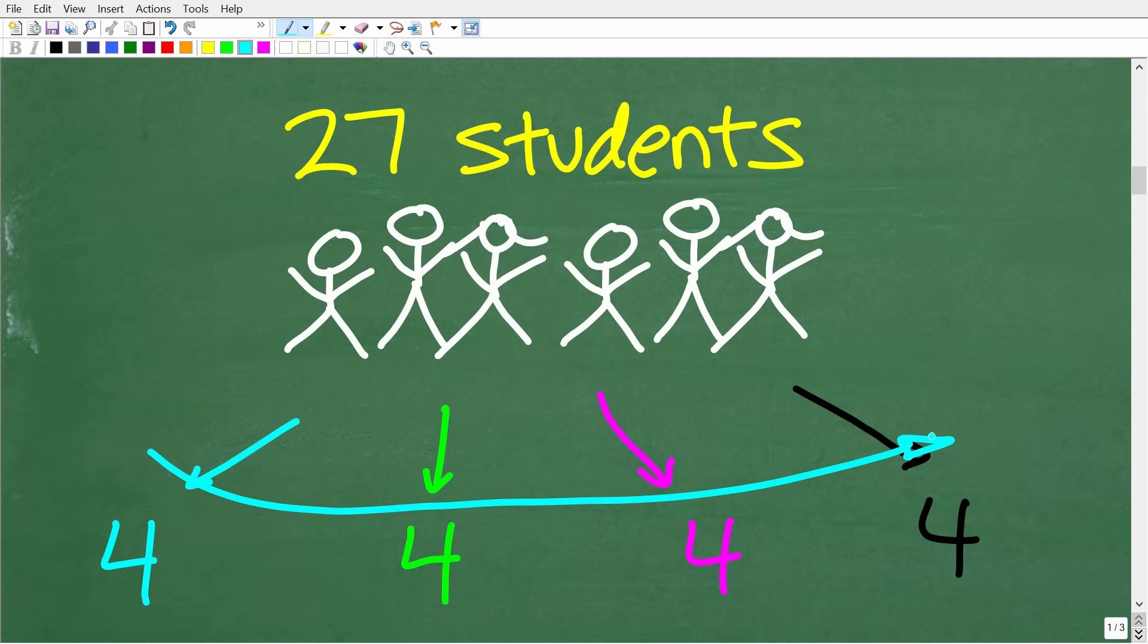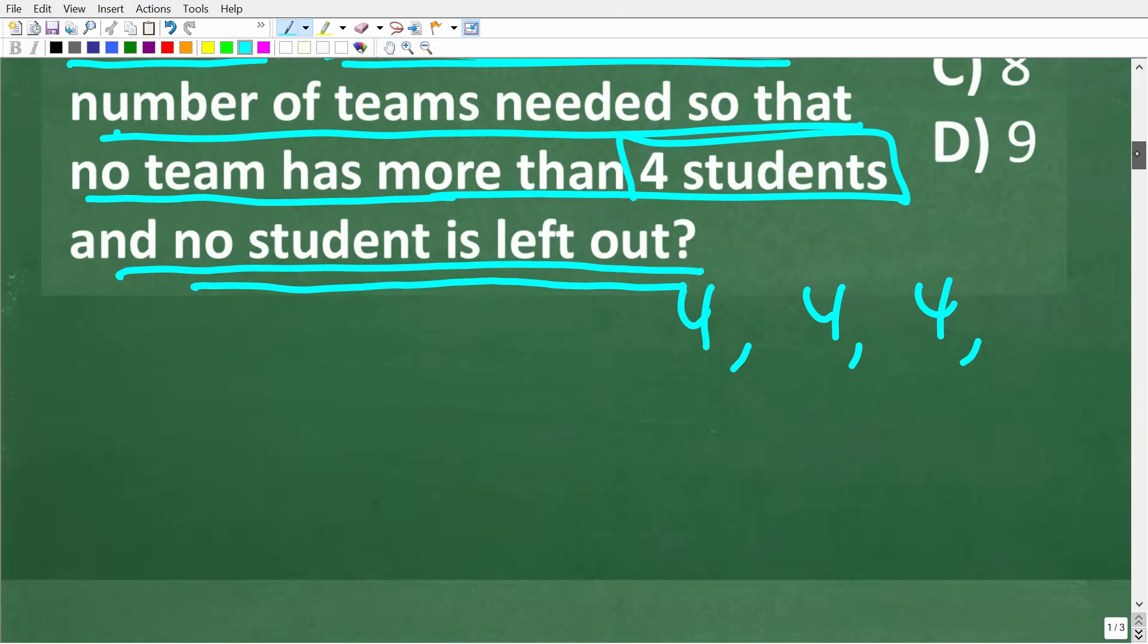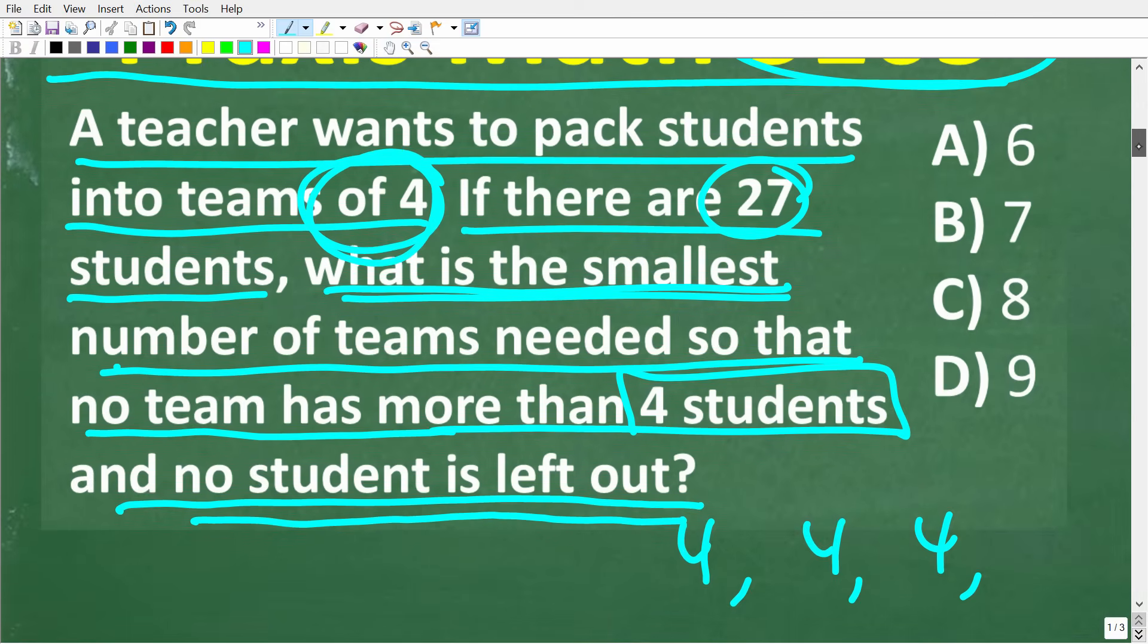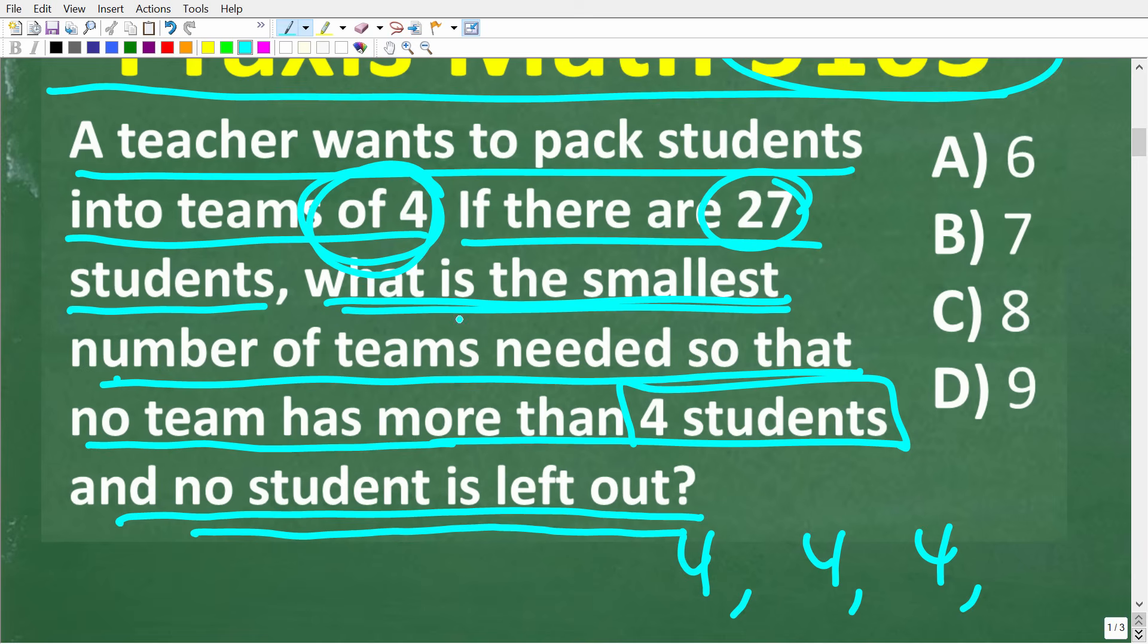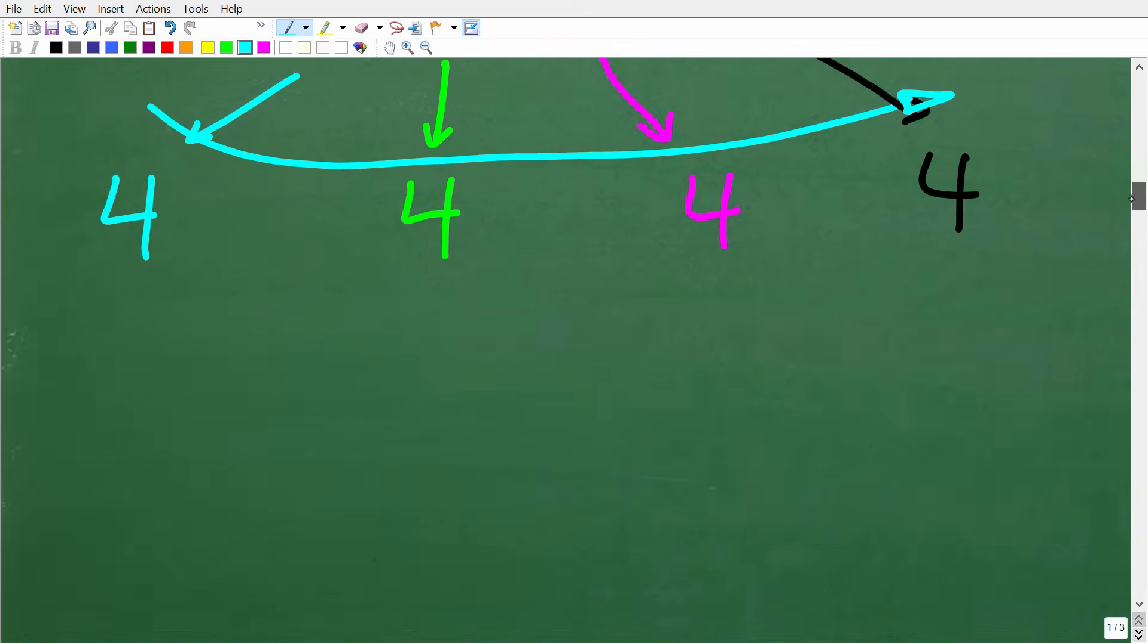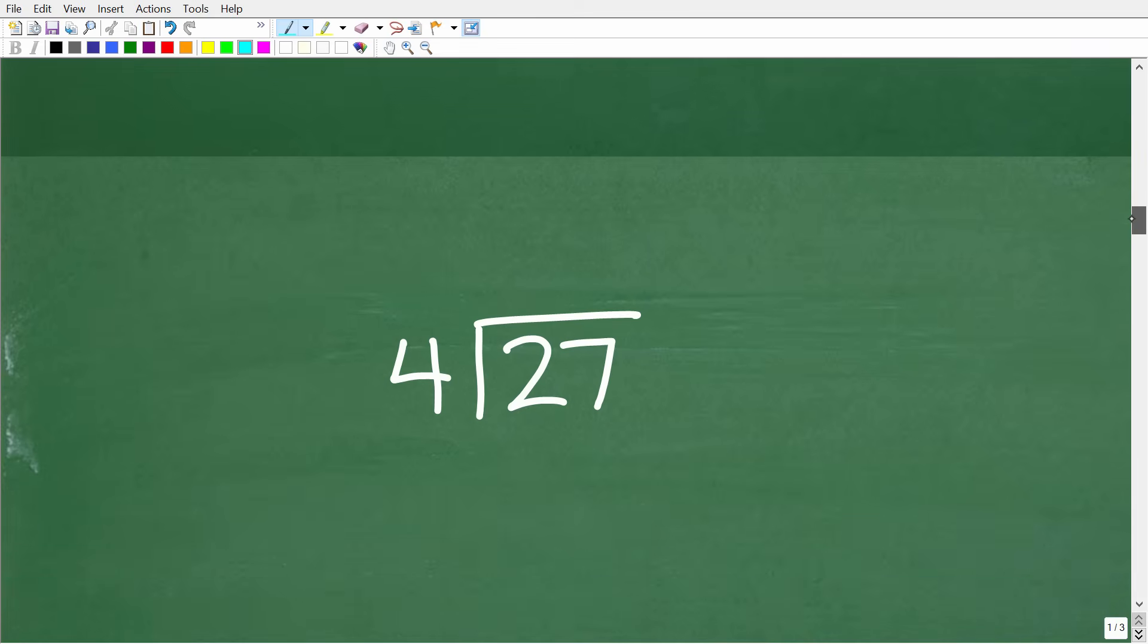How many teams of four can we or do we need or how many total teams do we need to make this happen? So remember the question here is what is the smallest number of teams needed so that no team has more than four students. So we have to go back to the problem and make sure we understand it. No team has more than four students. So can a team have less than four students? Yes. And of course, we're going to need a team that has less than four students. So what are we talking about here? Well, you guessed it. We're talking about division.